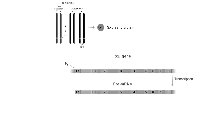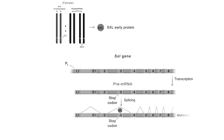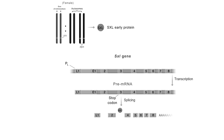In females, the SXL early protein binds to the SXL pre-mRNA and causes regulated splicing, in which exons 1 and 3 are skipped. This results in a mature mRNA with exons L1, L2, L4, 5, 6, 7, and 8. Translation of this mRNA produces the SXL late protein.